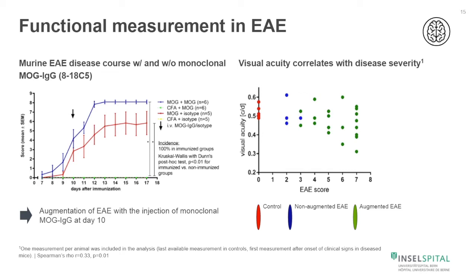When we do the functional measurements in EAE, we can clearly see that visual acuity correlates with disease severity. The development of the disease course is stronger in our augmented model compared to the basic EAE model, and this is directly correlated with visual acuity. Control animals have a visual acuity of approximately 0.5, corresponding to a severity grade of zero. Non-augmented EAE animals have a disease score of approximately 2 to 3 and have a lower visual acuity.